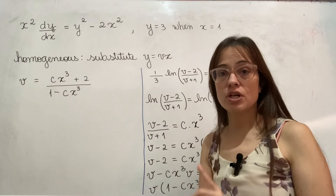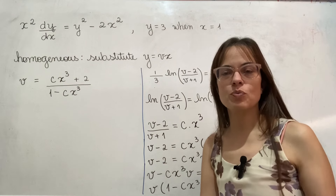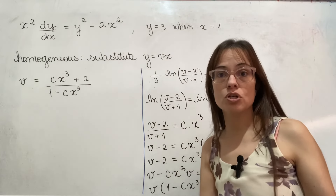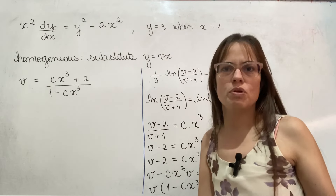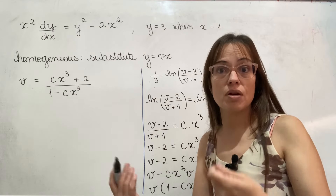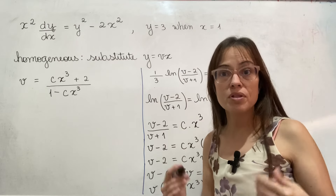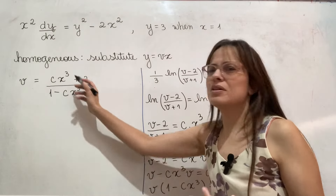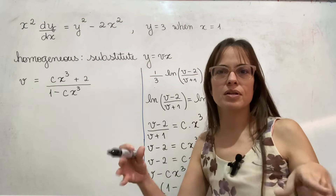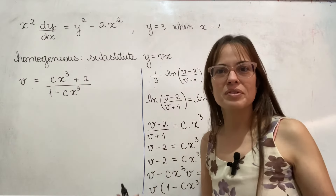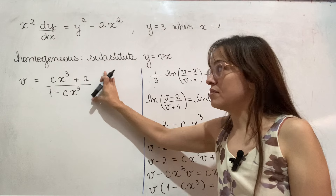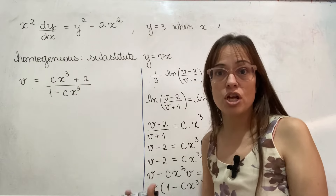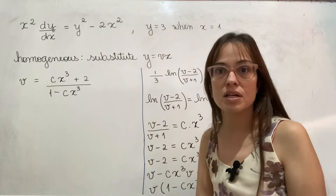I want to make a comment about when there can be more than one c. After a distributive step, one c can appear twice in the equation — and in that situation I'm no longer allowed to change the name of c, because this c needs to be exactly the same as that one.